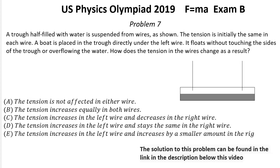Problem number 7. A trough half filled with water is suspended from wires as shown. The tension is initially the same in each wire. A boat is placed in the trough directly under the left wire. It floats without touching the sides of the trough or overflowing the water. How does the tension in the wires change as a result?